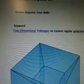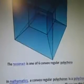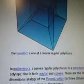The quotes and diagrams are from Wiki. The keyword is four-dimensional polytopes to convex regular polychorion. The Tesseract is one of six convex regular polychorion.